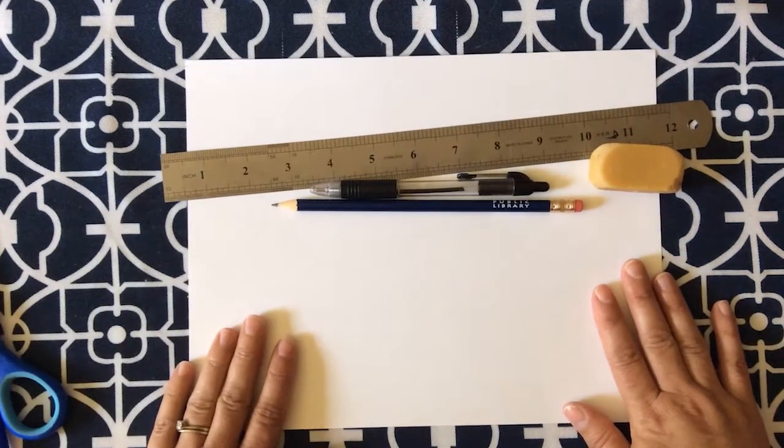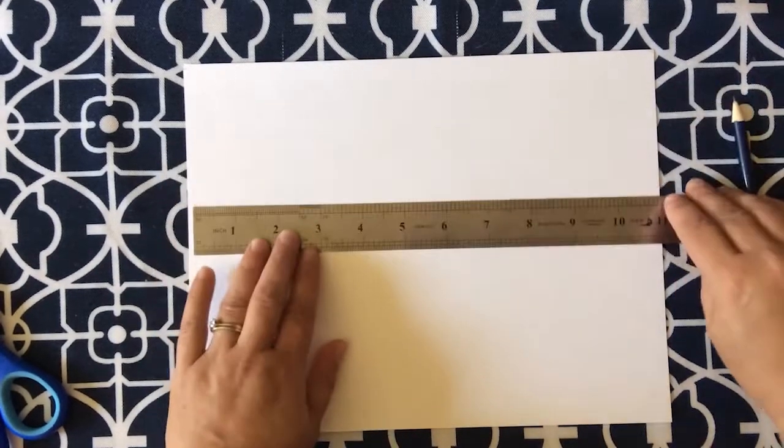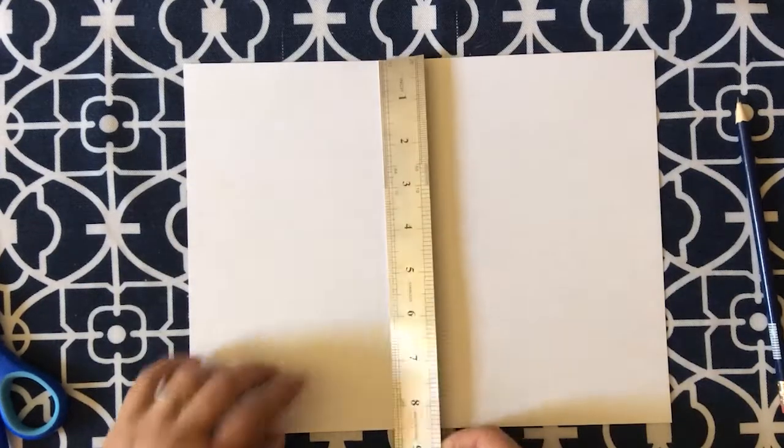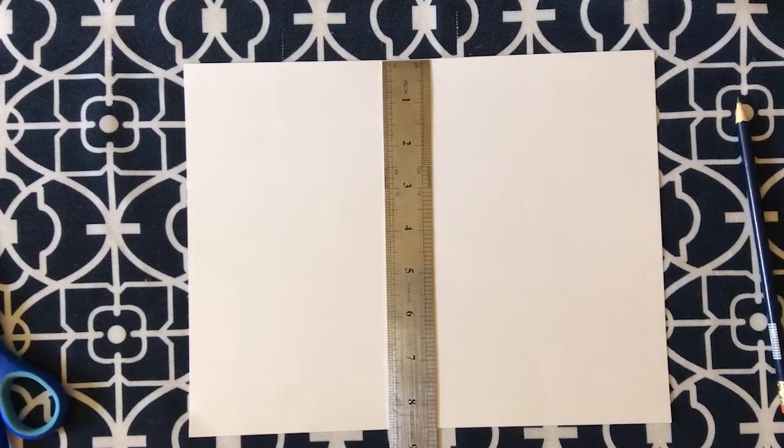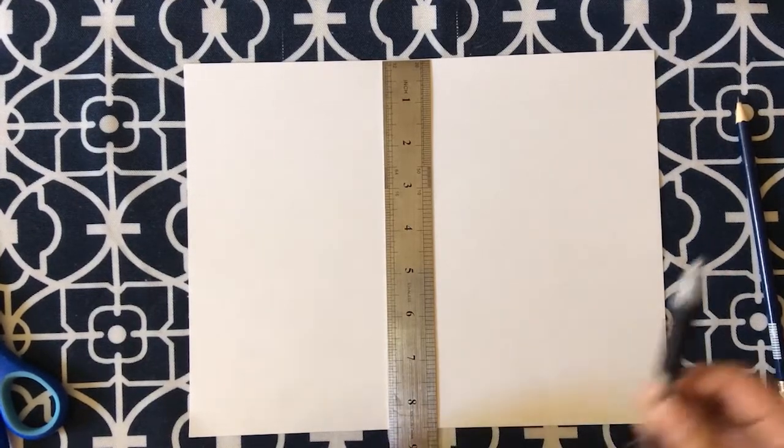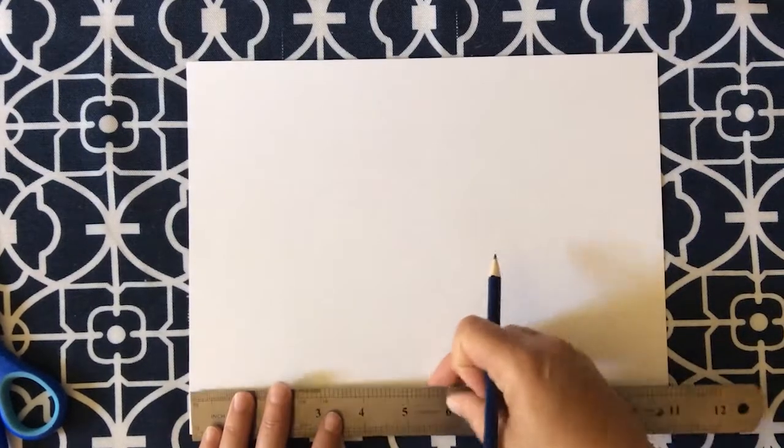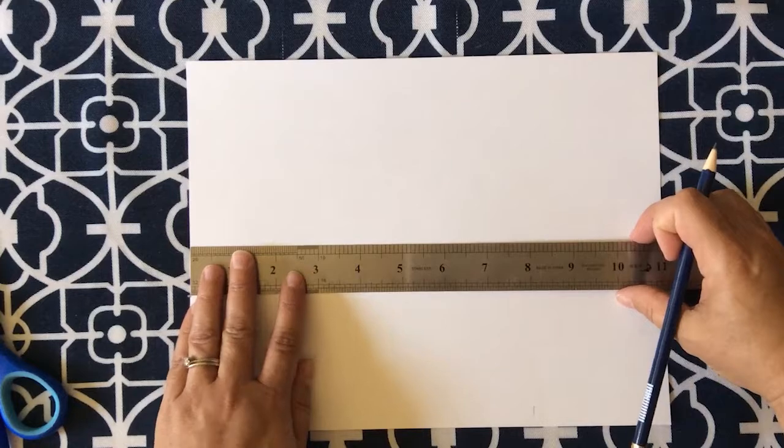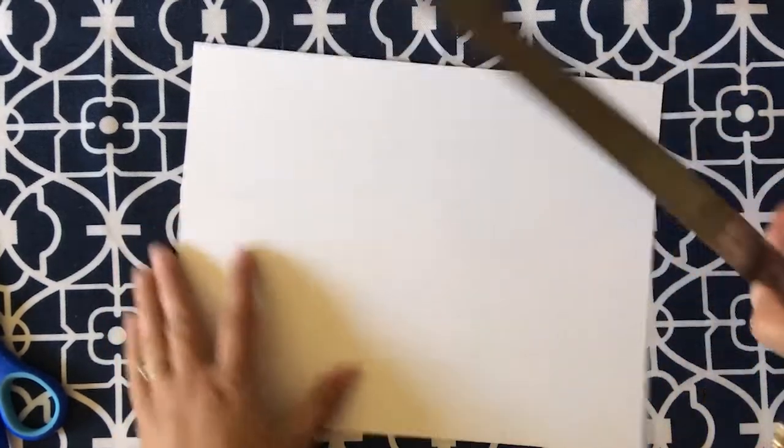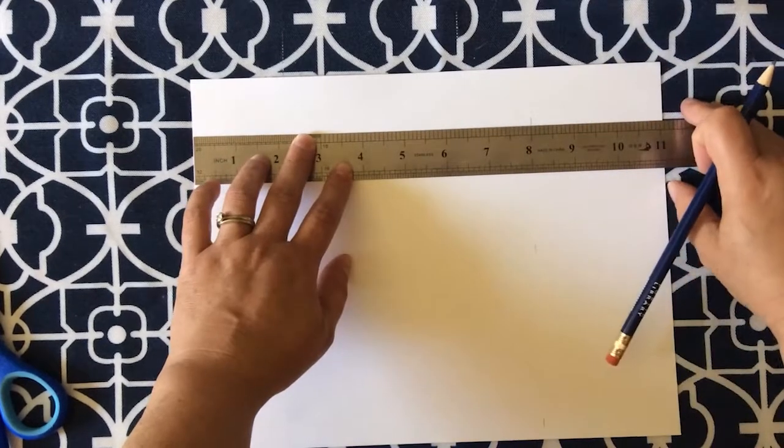So how do we start? The very first thing that we want to do is draw an eight by eight inch square on our piece of paper. So using our pencil, let's make some marks at eight inches. Let's do that a couple of places up the paper to mark where eight inches is.